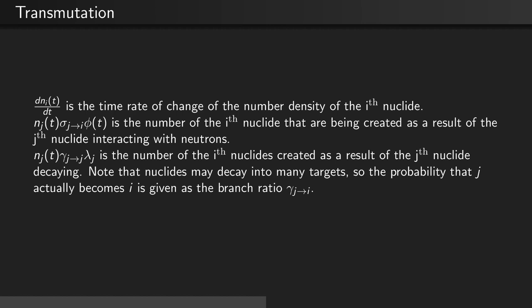Nj(t) γj→i λj is the number of the i-th nuclides created as a result of the j-th nuclide decaying. Note that nuclides may decay into many potential targets, so the probability that a j actually becomes an i is given as the branch ratio, γj→i.